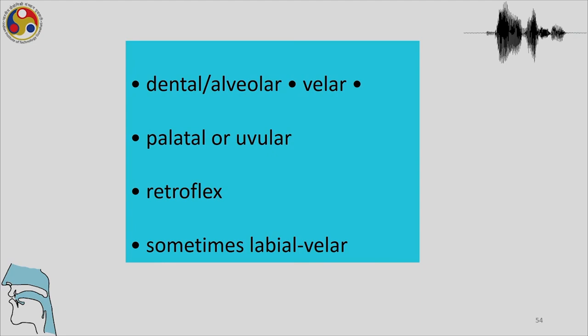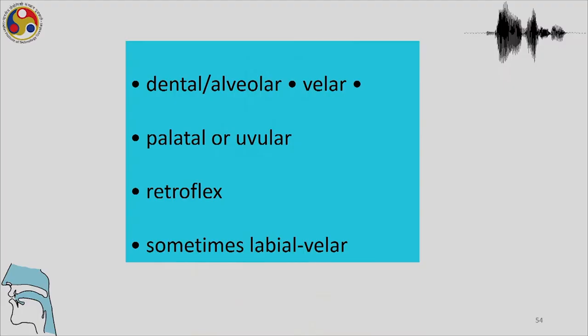In summary, languages most commonly have bilabial, dental or alveolar, and velar contrasts. If they have one more contrast, it could be palatal or uvular; additionally, if there is another contrast, it could be retroflex. Furthermore, a fifth place of articulation could be labial-velar. These are the possibilities in terms of place of articulation of mainly stops.